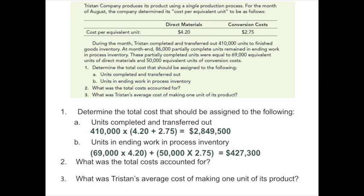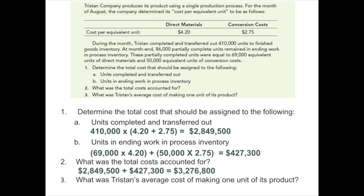Therefore, the total cost accounted for is the total cost of units completed and transferred out, plus the total cost of ending work in process inventory, which is $3,276,800. Tristan's average cost of making one unit of product is the cost per equivalent unit for materials plus conversion, giving us $6.95.